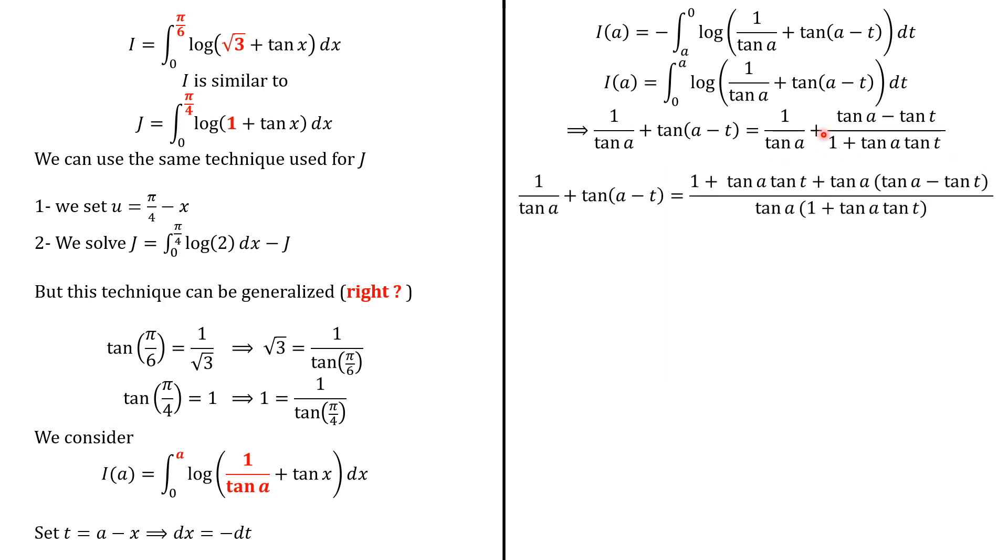So here we push everything to the same denominator, and here we will have the denominator, the original denominator, 1 plus tangent of a plus tangent of t. And this is multiplied by tangent of a, and we have this. But we see that tangent of a multiplied by tangent of t will cancel with minus tangent of a tangent of t, so that we have this next.